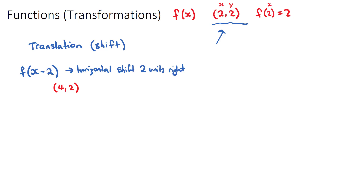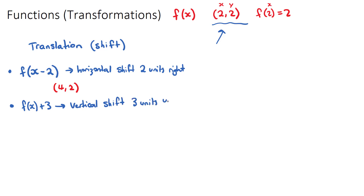For a vertical shift, we write f(x) + 3. Notice that the number added is now outside the bracket. Since f(x) is the same as y, we're adding 3 to the y value. This is a vertical shift — 3 units up, or 3 units in the positive y direction. So at our original point, x doesn't change but y has 3 added to it: 2 + 3 = 5, giving the new point (2, 5).